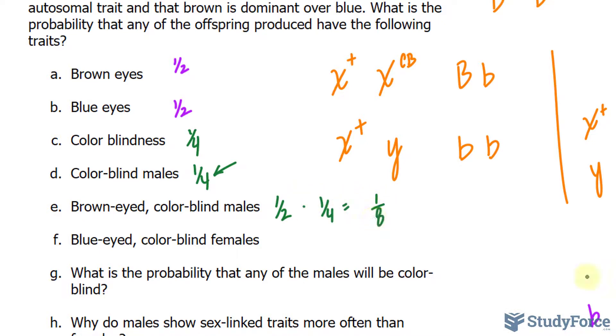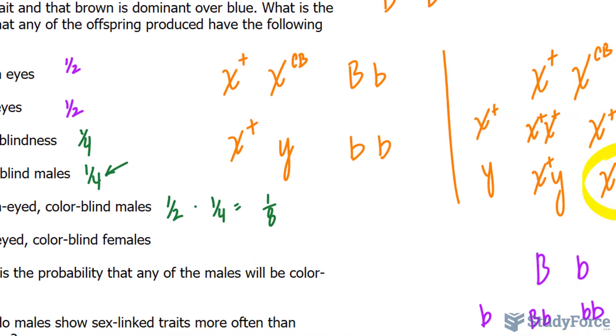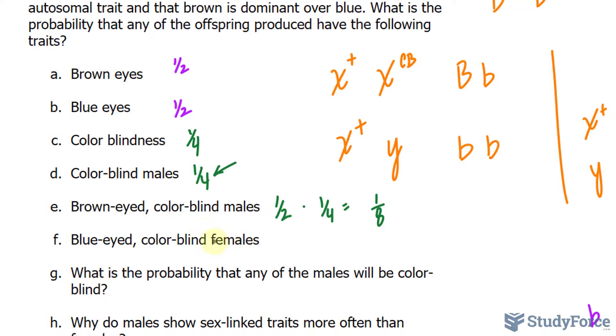What about blue-eyed and colorblind females? Well, we learned that none of the females will be colorblind. So the possibility of that is zero percent, and multiplying it to the number of blue-eyed, which is half, makes zero.